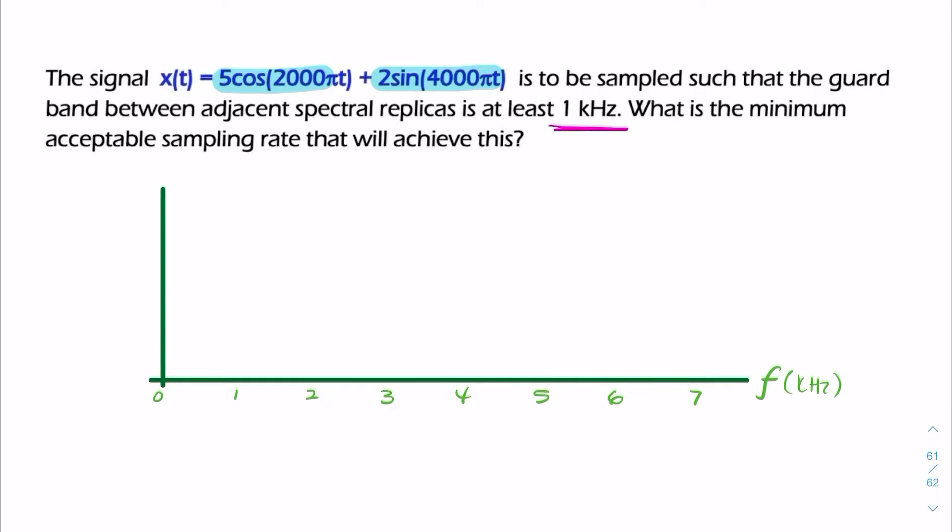We're oversampling, so there'll be a 1 kilohertz gap, a separation, we call it a guard band, between adjacent replicas. So we need to first find the Nyquist rate, and then add that 1 kilohertz, and I'll illustrate how that looks in the frequency domain.